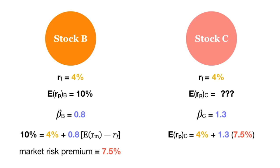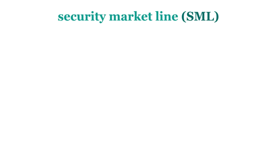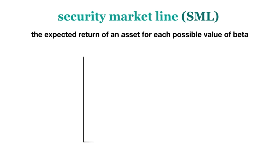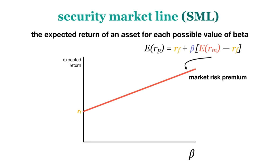The security market line graphs this CAPM equation. This tells us what the expected return of an asset should be for each possible beta value. The expected return is on the y-axis and beta is on the x-axis. The y-intercept is at the risk-free rate because risk-free investments have no risk premium and therefore have a beta of 0.